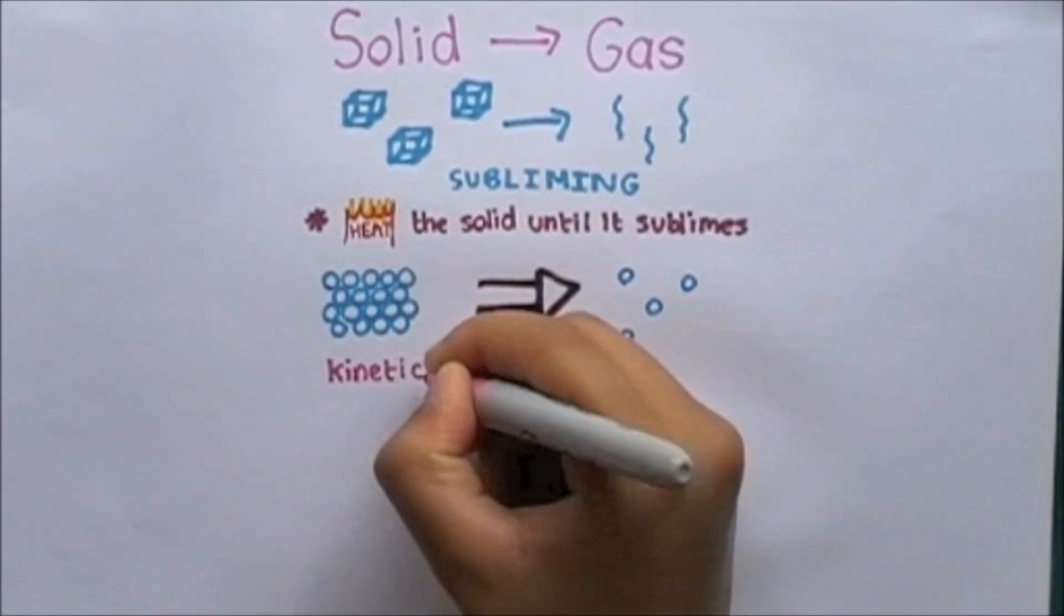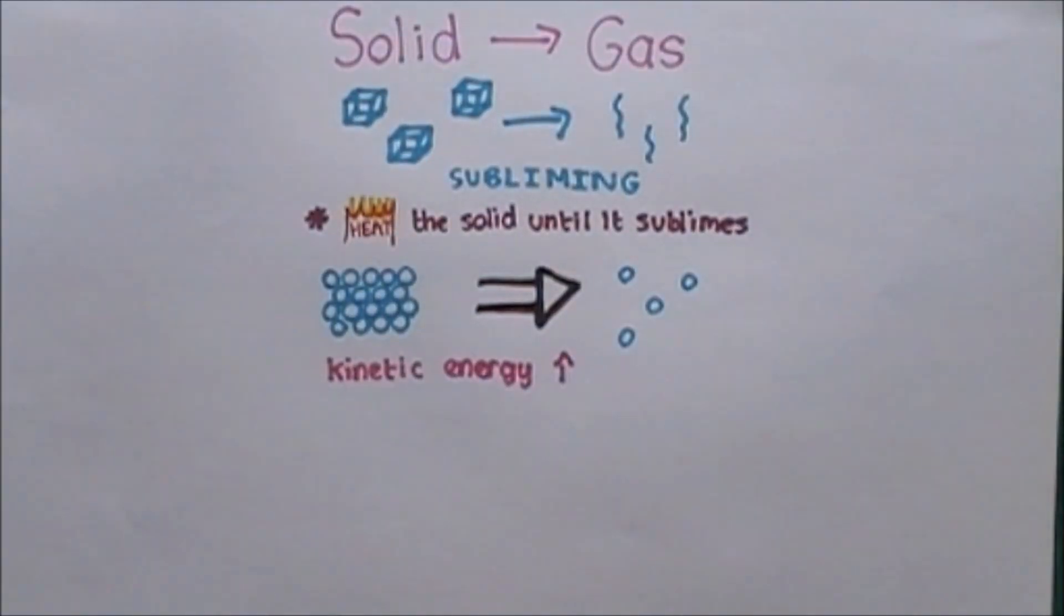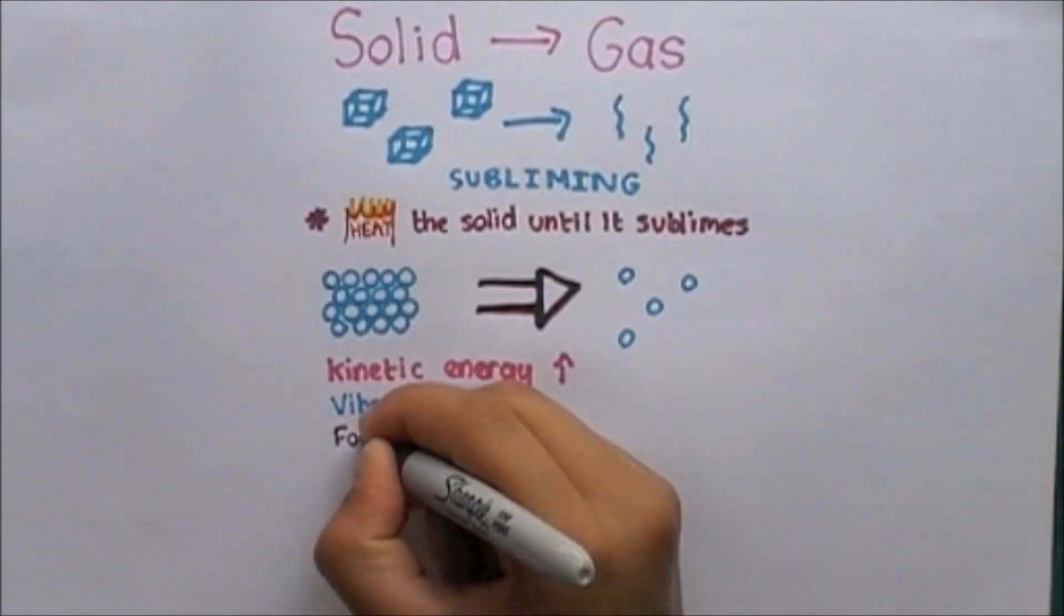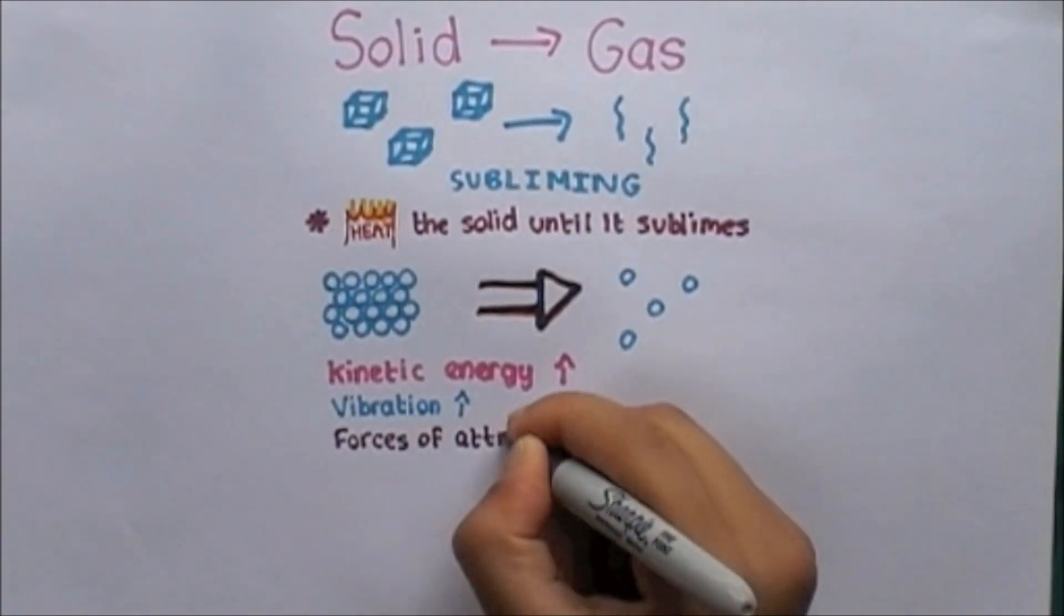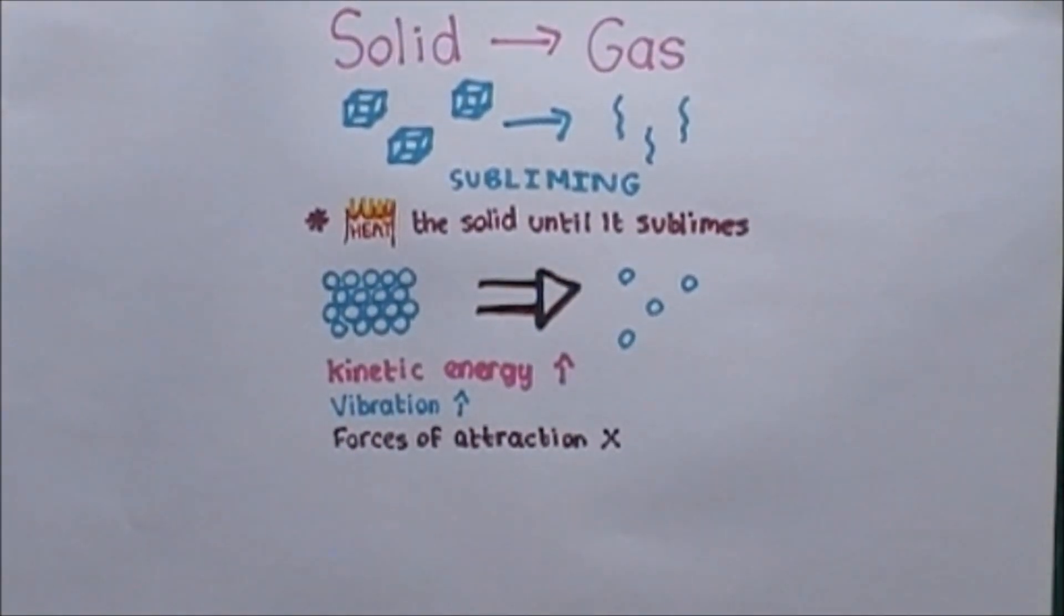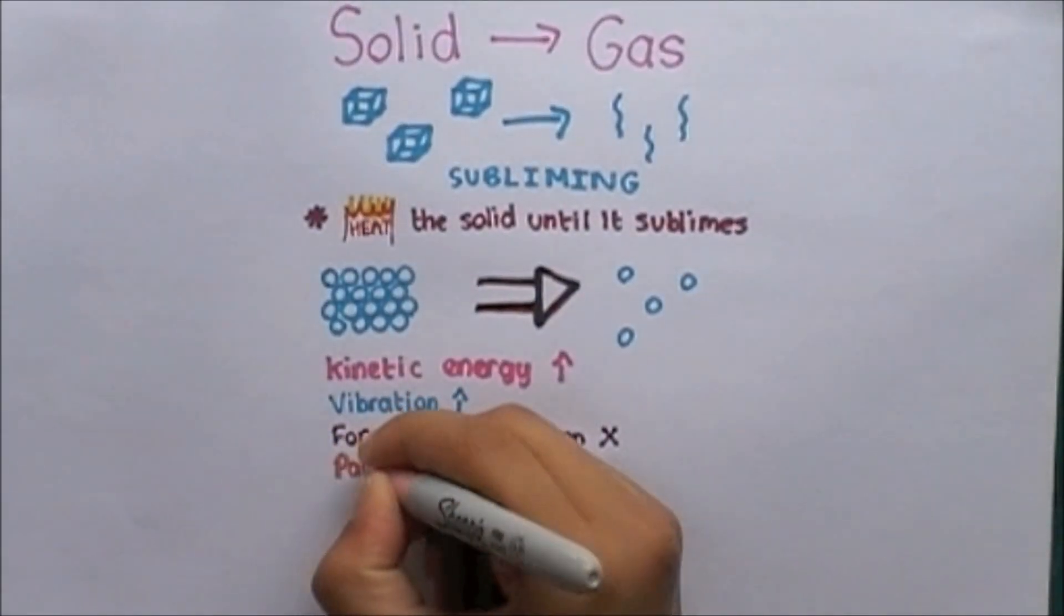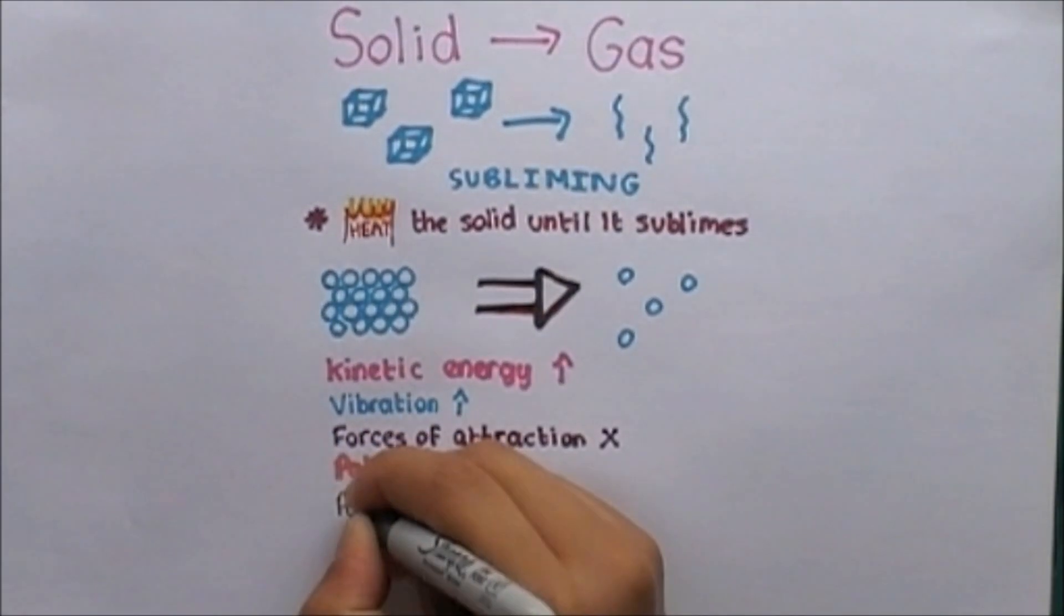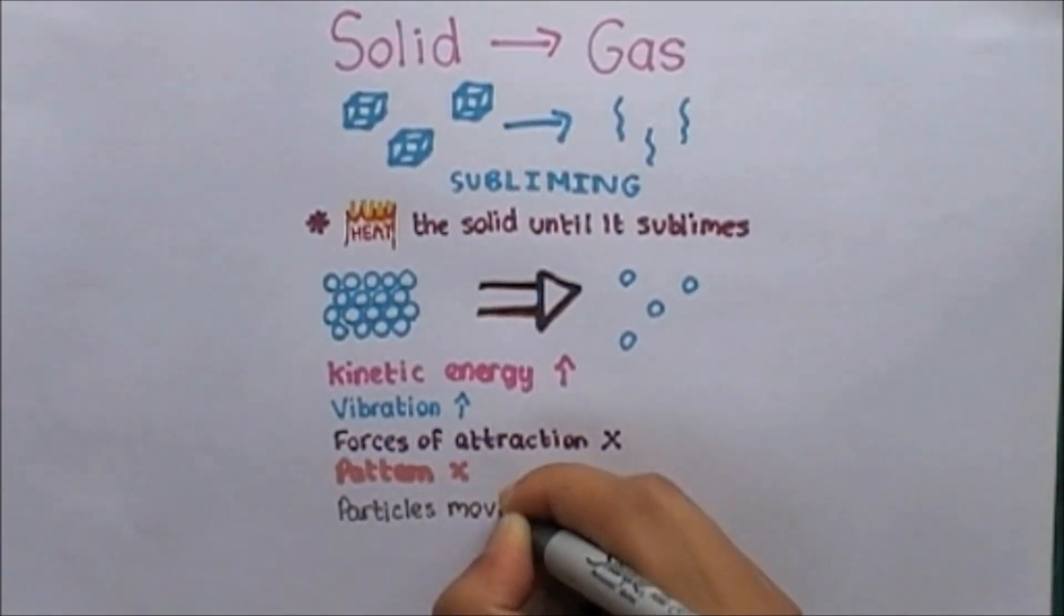When a solid changes into a gas, the particles gain kinetic energy and vibrate more. The forces of attraction are completely broken, so there is no pattern and the particles are able to move freely. An interesting use of sublimation can be seen when solid CO2, dry ice, is sublime in theatres to create stage smoke effects.